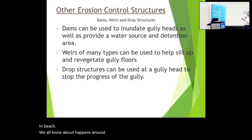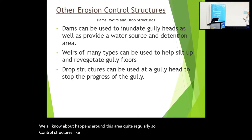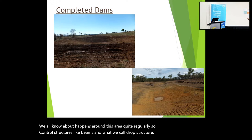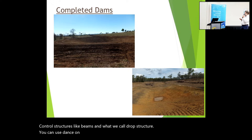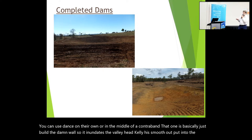A few other control structures: dams and what we call drop structures. You can use dams on their own or in the middle of a contour bank, and basically just build the dam wall so it inundates the gully head — your gully head gets smoothed out and put into the dam. You've just got to be careful with your bywash — make sure it's into a very stable area, otherwise you're just shifting the problem.